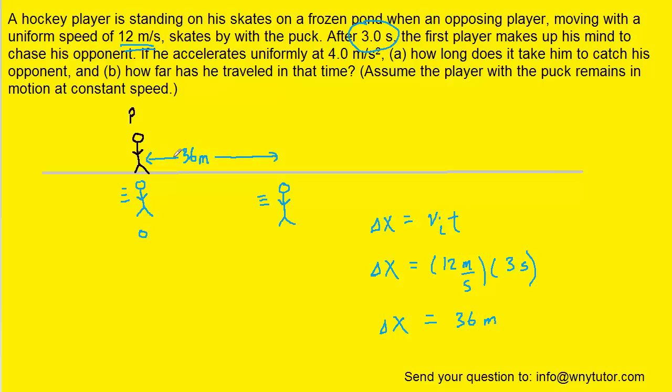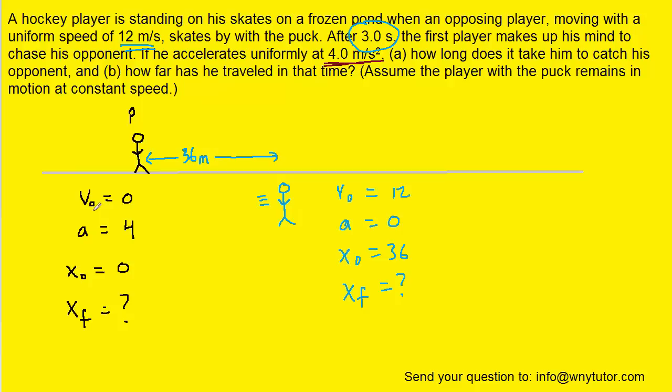We will next list the values we know for both the player and the opponent. For the player: initial velocity is zero, acceleration is four meters per second squared, initial position is zero, and final position is unknown. For the opponent: initial velocity is 12, acceleration is zero, initial position is 36 meters, and final position is unknown.